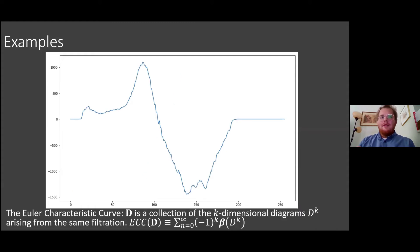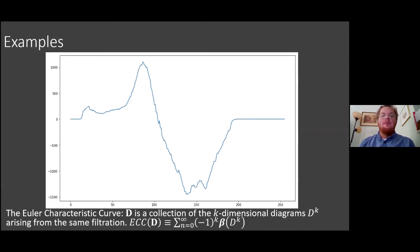Persistence curves also subsume other popular summaries. For example, the Euler characteristic curve — the alternating sum of Betti numbers — can be constructed as the alternating sum of our Betti curves. So within this framework we're able to derive or subsume many summary functions.